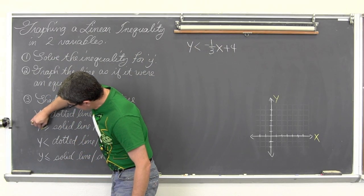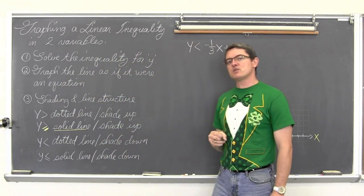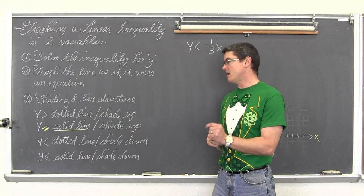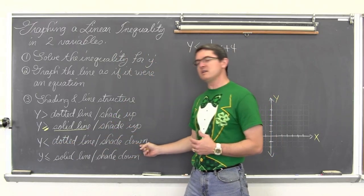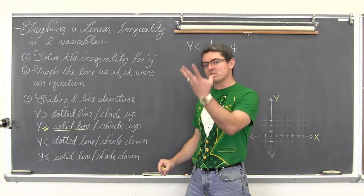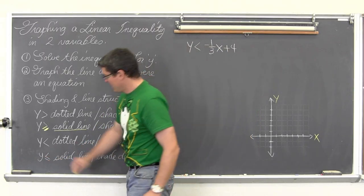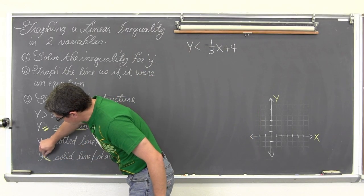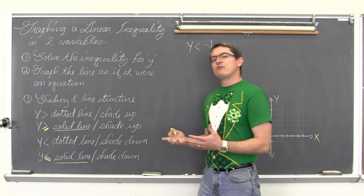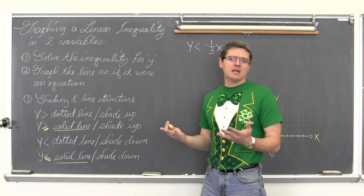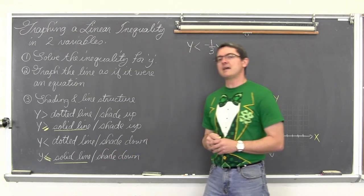When you have an equal sign as part of your inequality, you want to have a solid line. And then if it is less than, you have a dotted line and you shade down because your y values get smaller as you go down the y-axis. And if it is less than or equal to, again with the equal sign, that means that your graph itself is part of the solution set, and you shade down.